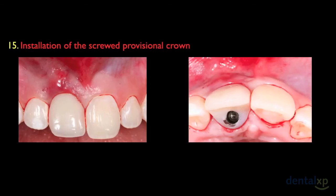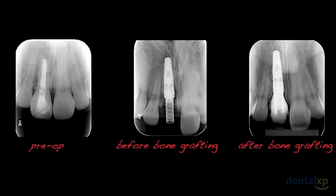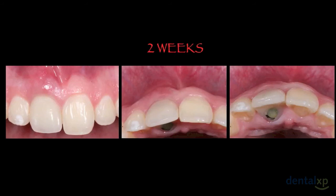Just to note, in this case the provisional crown is shorter than the contralateral tooth to be out of occlusion. Following this sequence — before, after implant insertion, and after bone reconstruction — you can notice total filling of the gaps. Here, two weeks later, we can see the healing process of soft tissues, good repositioning of the gingival margin, and maintenance of soft tissue volume.